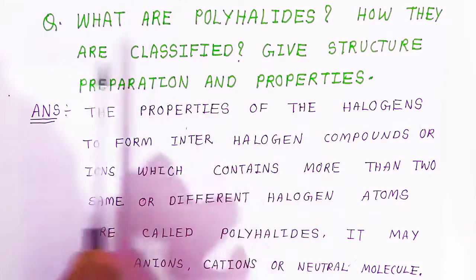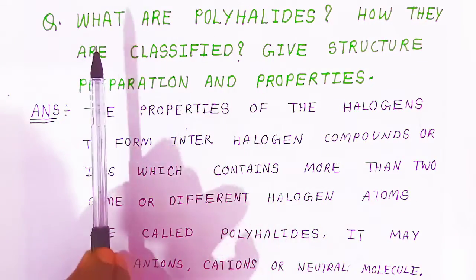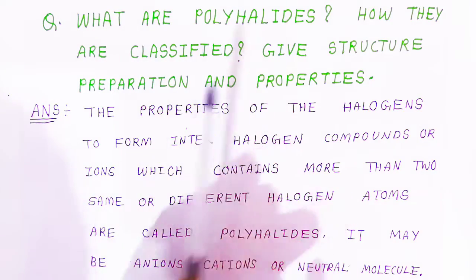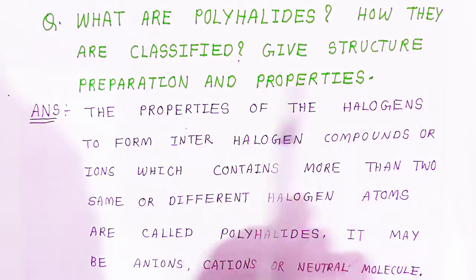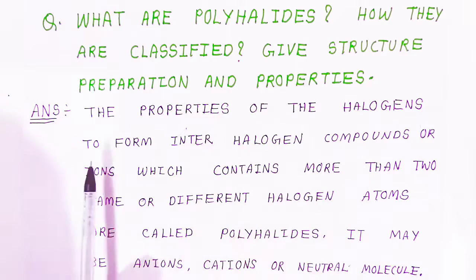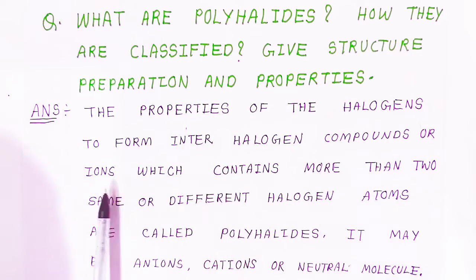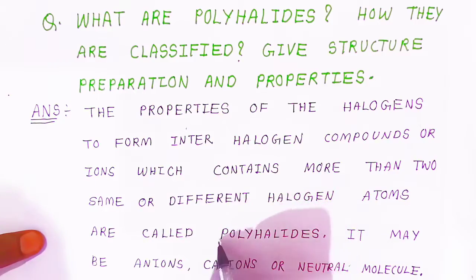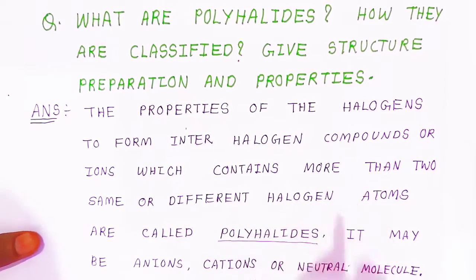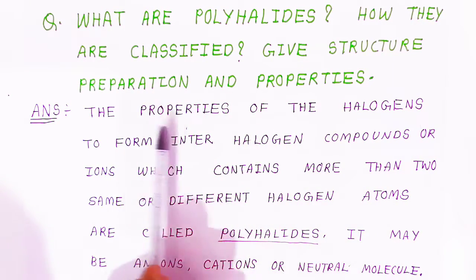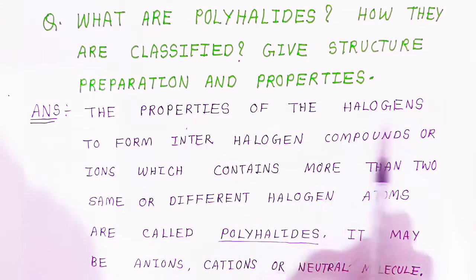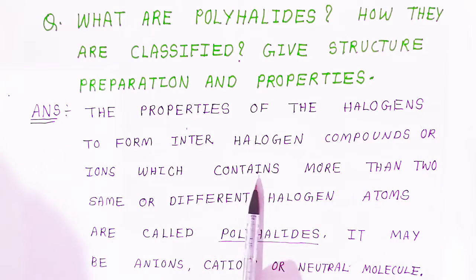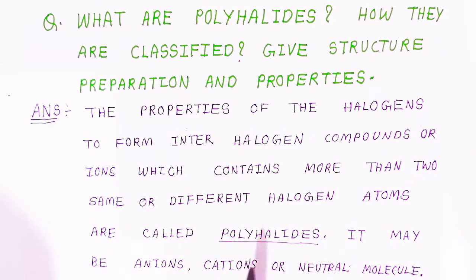These types of questions are very important in examinations. The properties of halogens to form interhalogen compounds or ions which contain more than two same or different halogen atoms are called polyhalides. This is the important definition of polyhalides.